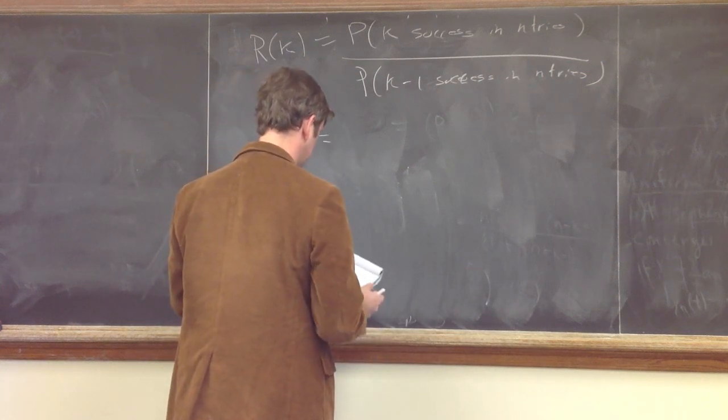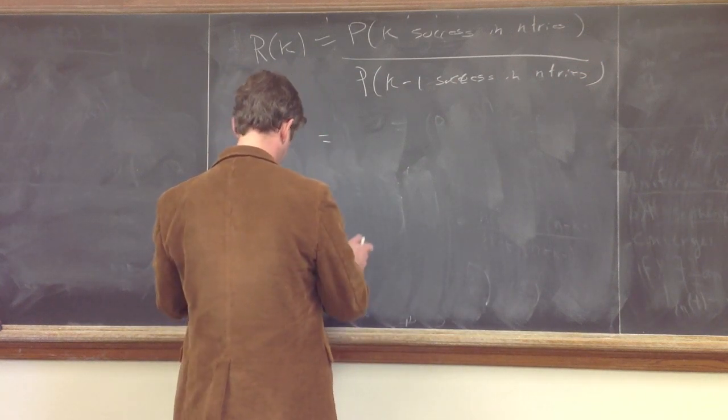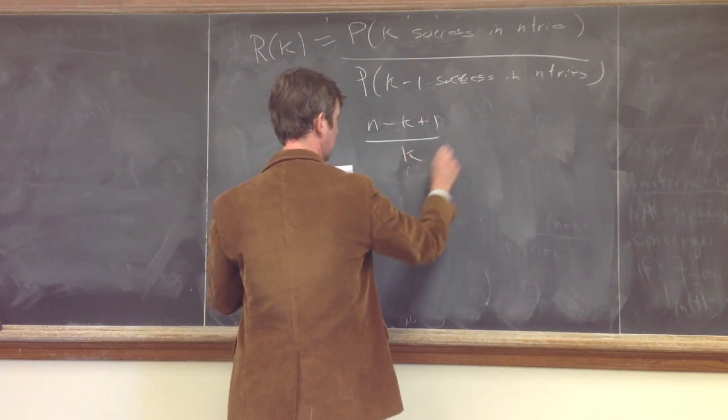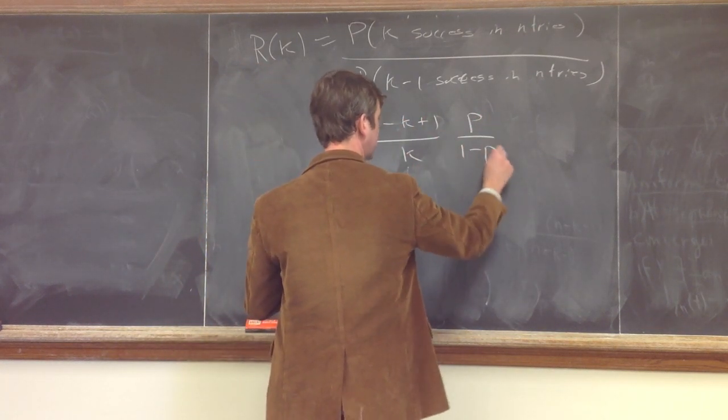And if you do the calculation, this is just n minus k plus 1 over k times p over q, which is 1 minus p.